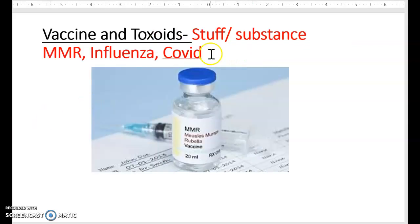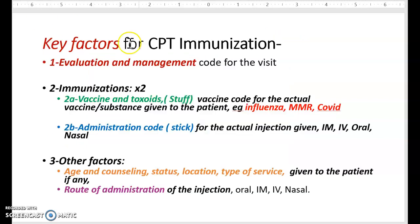Remember we talked about vaccines and toxoids — all the substances put into one injection. So again, these are all the key factors you are coding for: evaluation and management, one code; and two codes for immunization — vaccines and toxoids, and the administration code, which is the stick.